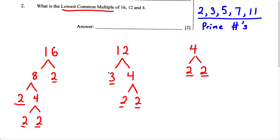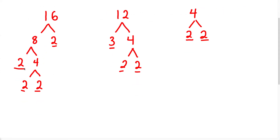Now once we have done this, in prime factorization we're going to multiply the prime factors. When we look at this, we know we have two distinct numbers: a 2 and a 3. So let's write 3. How many times does 3 appear? Well, 3 only appears one time, therefore we write it once. So we have 3 multiplied by 2 to a certain power. For the number 16, 2 appears 4 times.